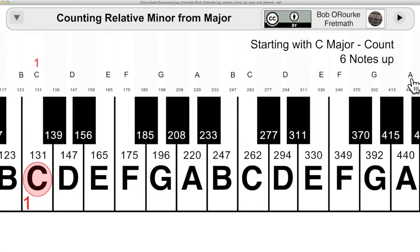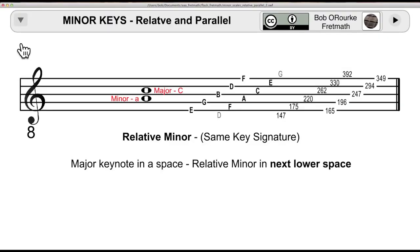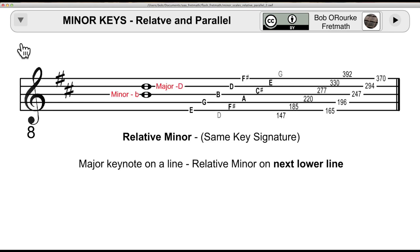There are other methods for finding the relative minor. I had learned to count six notes up from the major and that would be the relative minor. You could also count two notes backwards, that would be C, B, A. If you read staff notation, the minor is either the next lower space or the next lower line below the major.